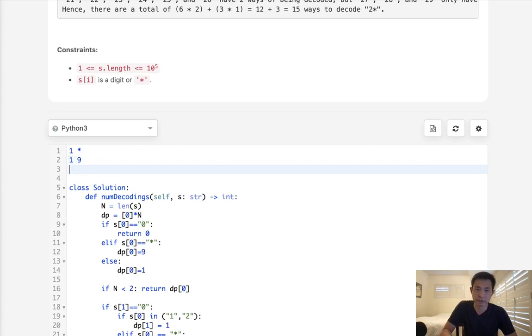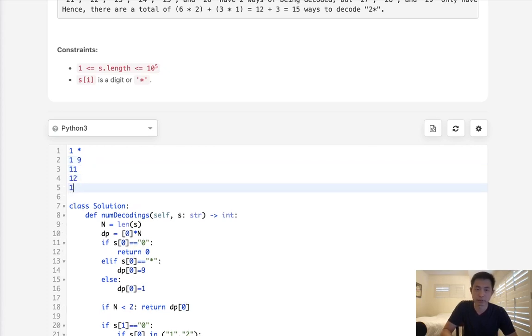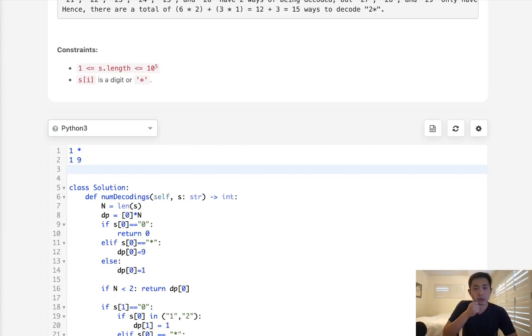But keep in mind, we also need to think about the ways that we can decode to like 11, 12, 13. Like those are all extra ways that we can decode. So depending on whether this is a one or a two, if it's a one, we have to add another nine times however many ways we decoded when it was a one. But if this was a two, that'd be different because we can't decode 29. We can encode 26.